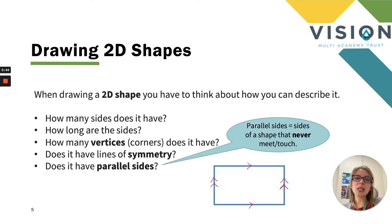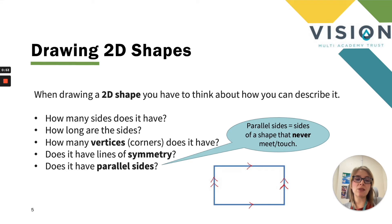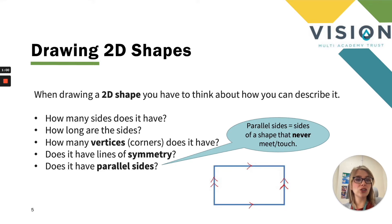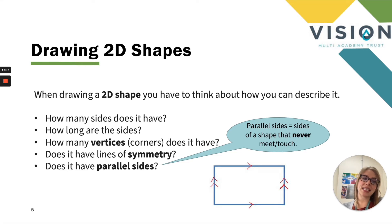So let's start by looking at drawing 2D shapes. When drawing a 2D shape we have to think about how we can describe it. We need to be asking ourselves: how many sides does it have, how long are the sides, how many vertices or corners does it have, does it have lines of symmetry, and does it have parallel sides? Parallel sides are sides of a shape that never meet or touch.